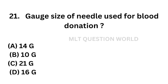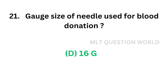Quiz No. 21. Gauge size of needle used for blood donation. Option A: 14 gauge. Option B: 10 gauge. Option C: 21 gauge. Option D: 16 gauge. The correct answer is Option D — 16 gauge. Gauge size of needle used for blood donation is 16 gauge. Note: gauge size is inversely proportional to the diameter.